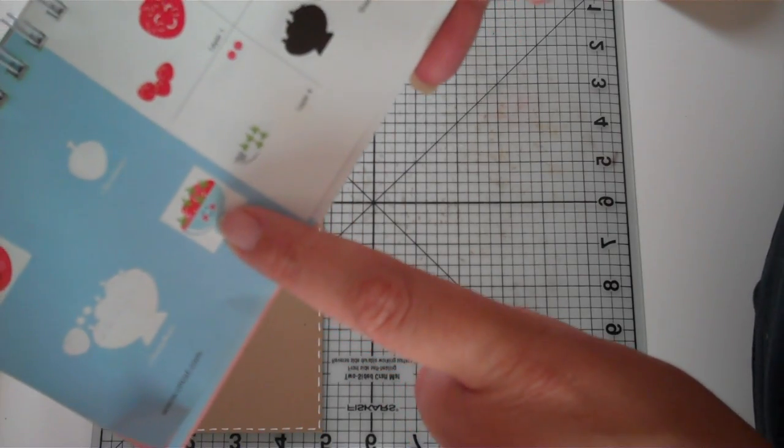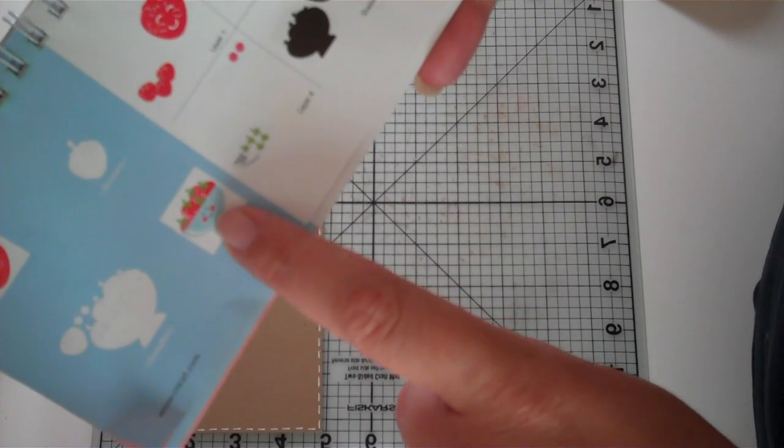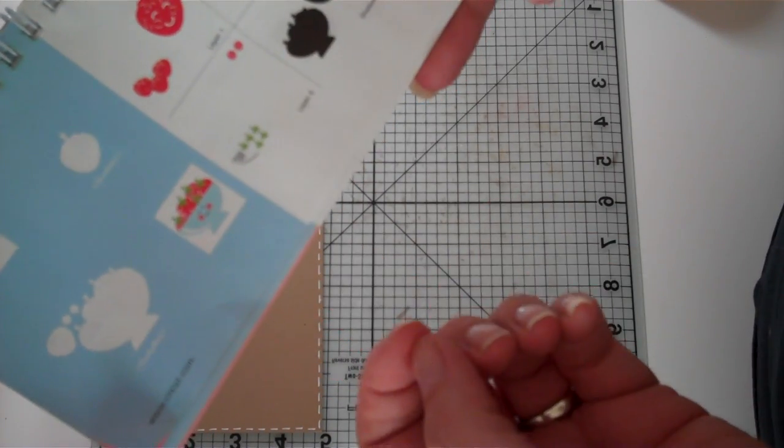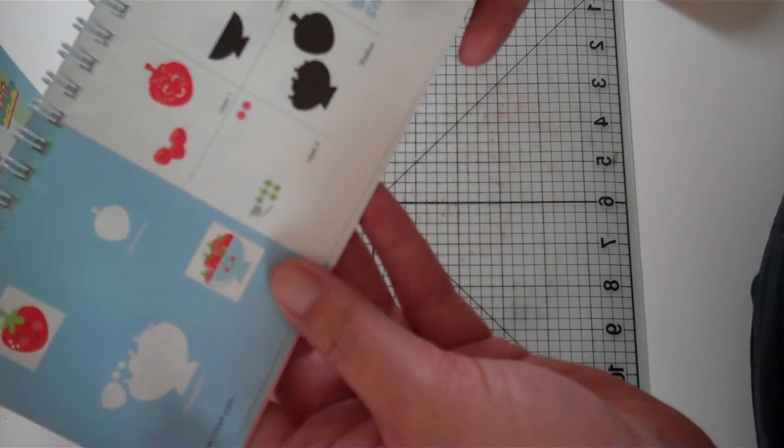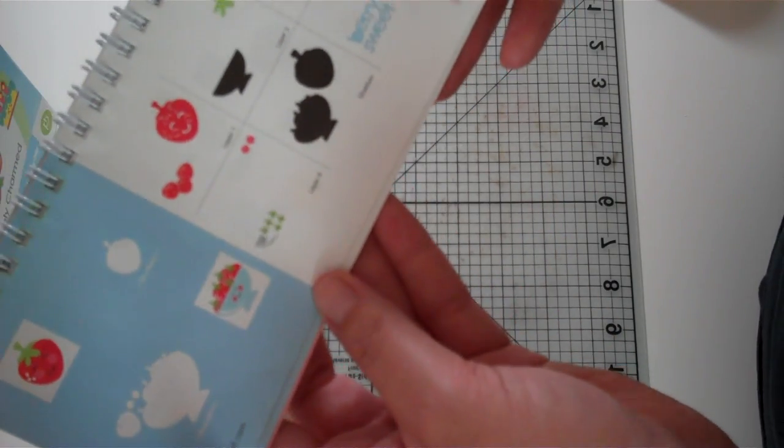Normally I would just use my Gypsy and hide the eyes and the mouth with the Hide Contour feature but my Gypsy is on its way to Provo Craft right now because she broke so she's being replaced.